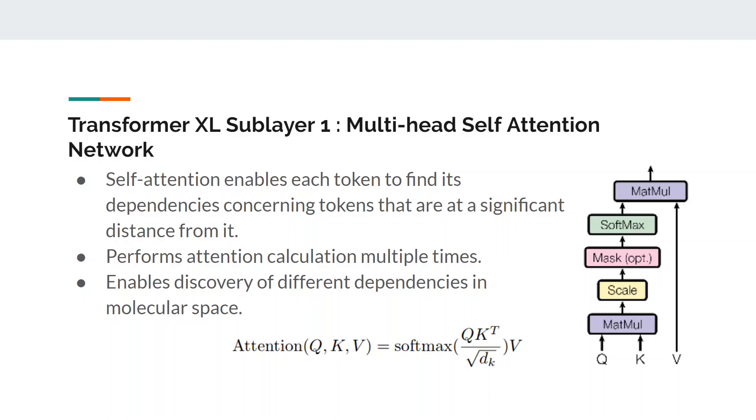In language modeling, the probability distribution of the token i depends on the i-1 tokens before it. Hence, it is essential to perform masking to avoid any flow of information leftwards. The multi-head attention layer performs attention calculation multiple times which helps in discovering different dependencies in the molecular space.